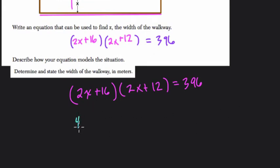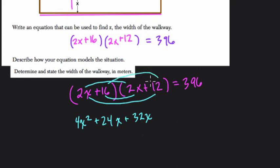2x times 2x is 4x squared. That's right here. 2x times 12, what's that? Well, that's 24x. 16 times 2x, that's 32x. And 16 times 12, well, 16 times 10 is 160, plus another 32 is 192.